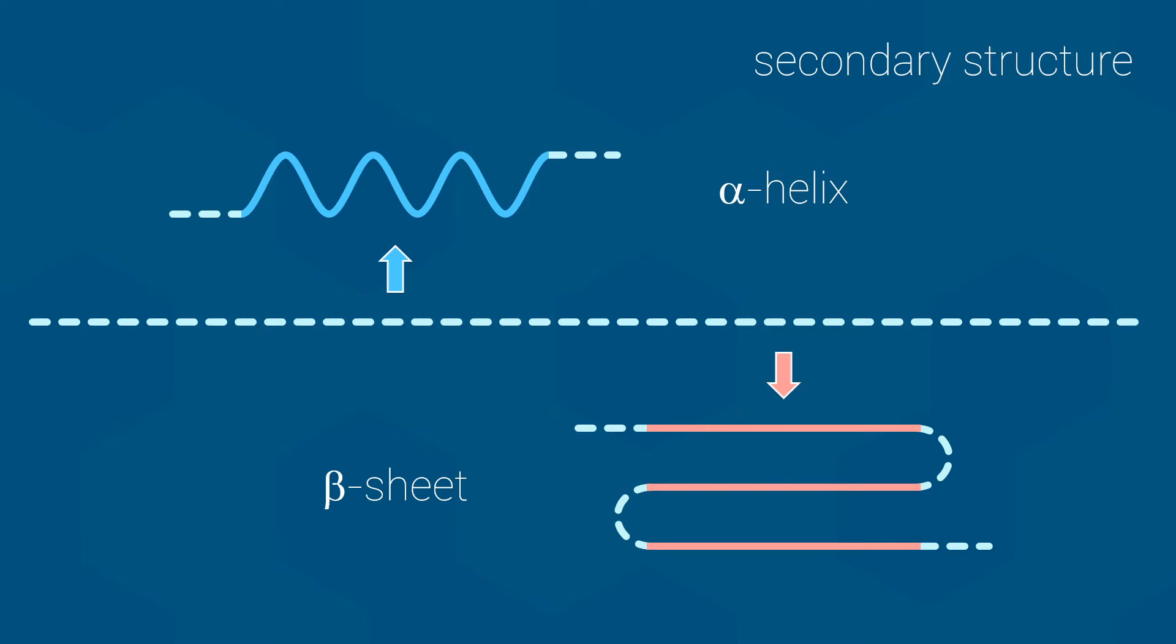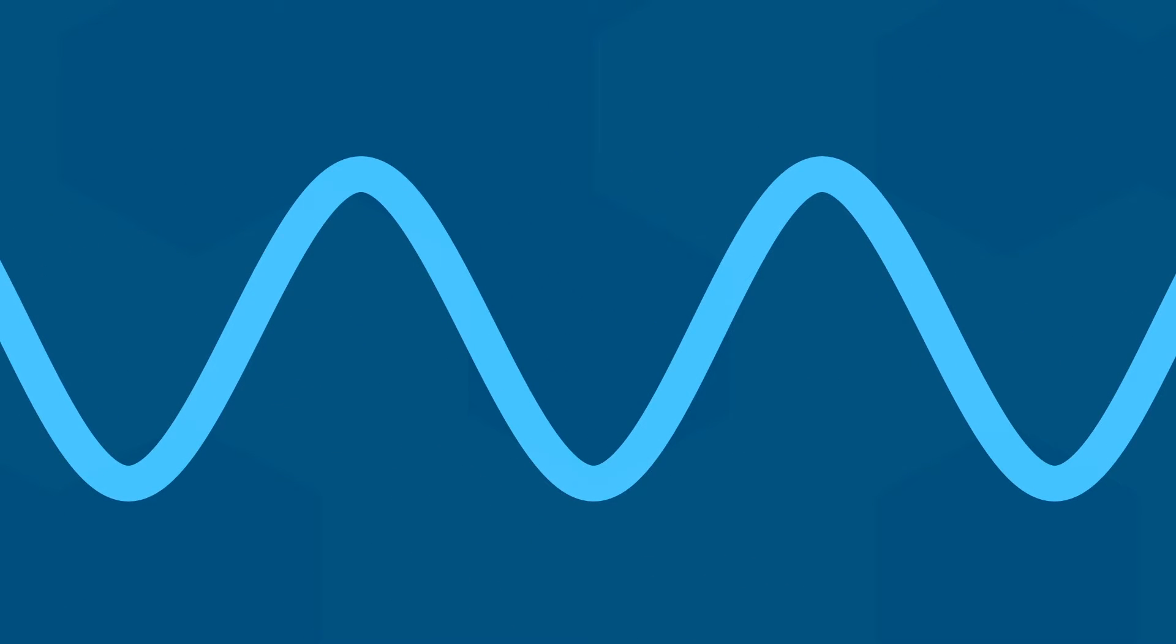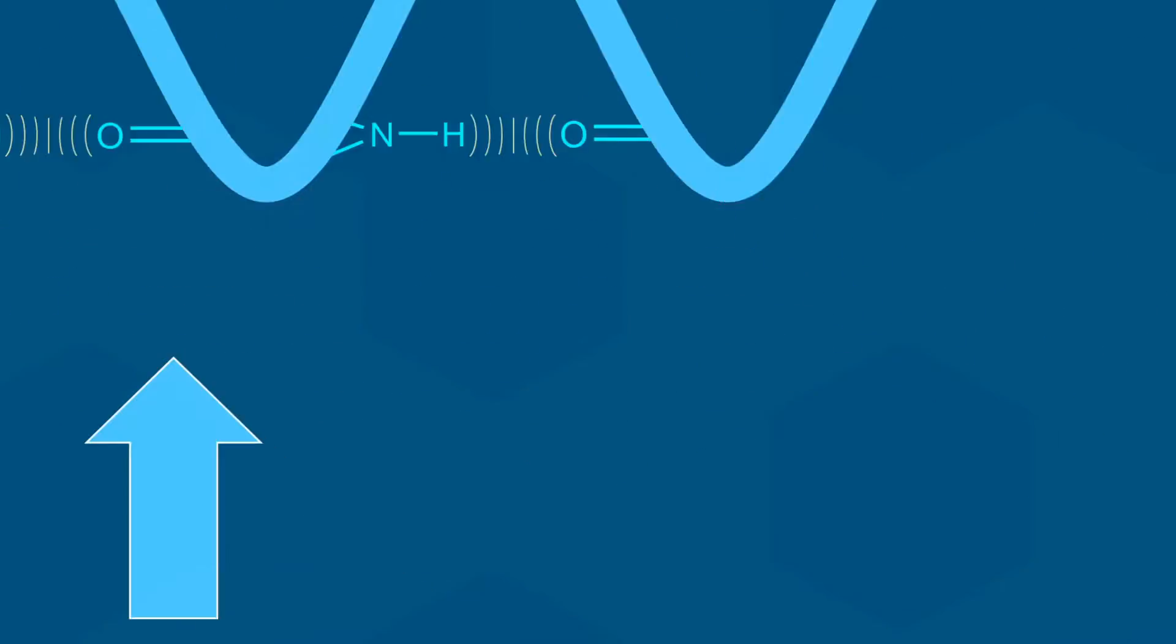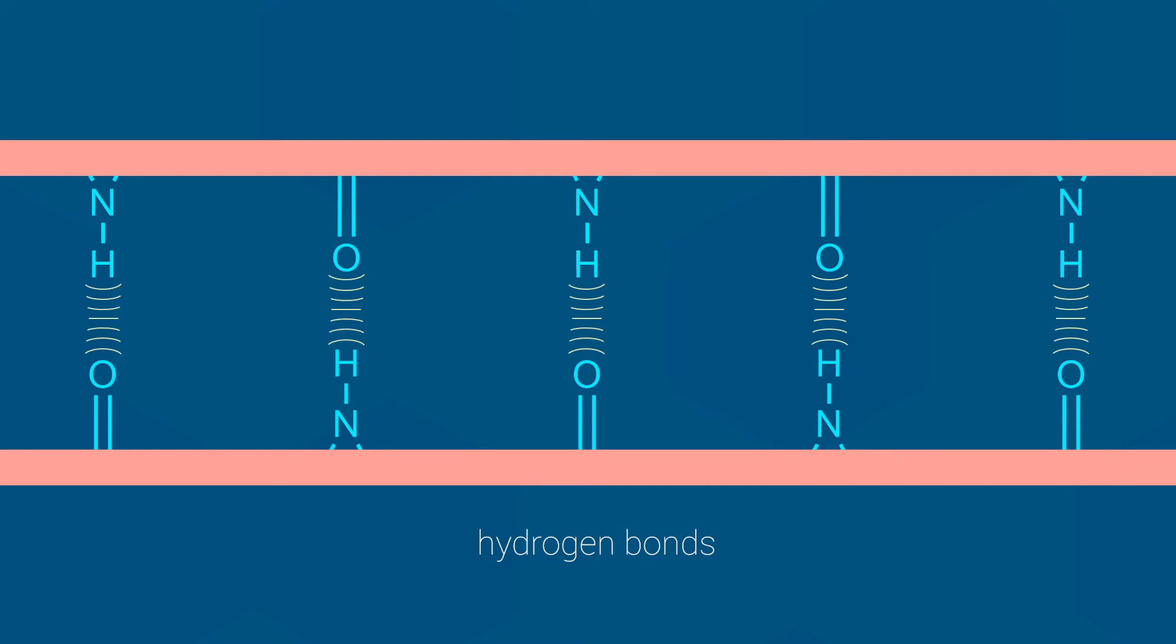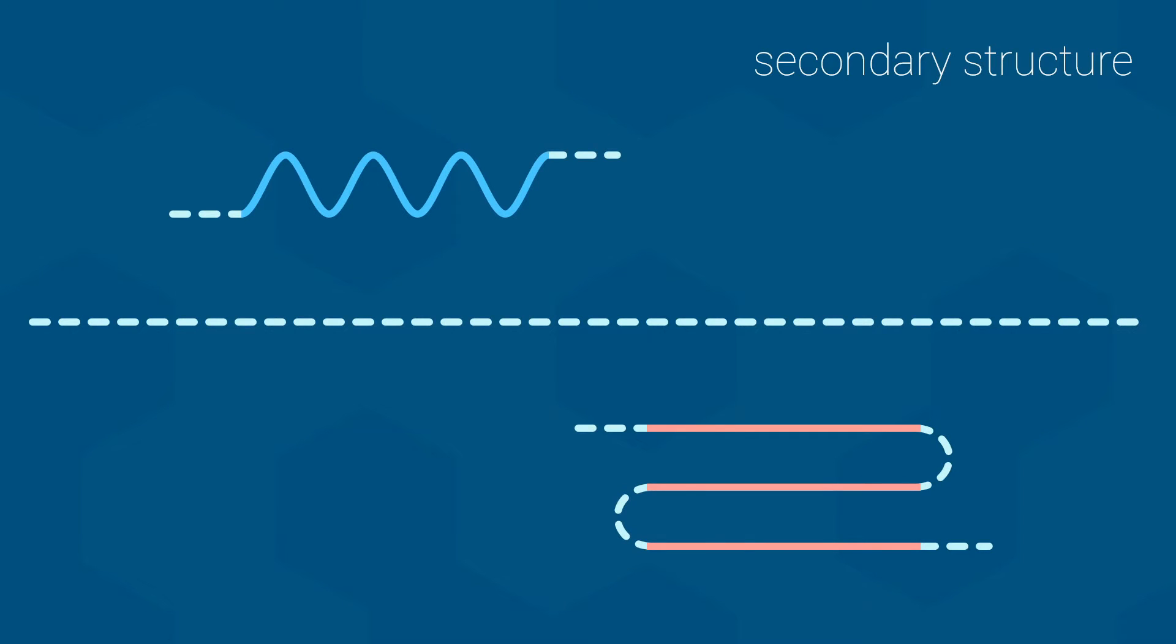Both alpha helices and beta sheets are held together by numerous hydrogen bonds between backbone atoms. The alpha helix hydrogen bonds run parallel to the long axis of the helix, as shown here. On the other hand, beta sheets use hydrogen bonds between neighboring strands in the sheet. You don't really need to worry about the details of this until second year biochemistry. Here in Biology 112, you just need to keep in mind that secondary structures form due to hydrogen bonds between backbone atoms.